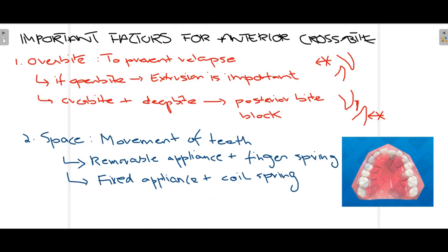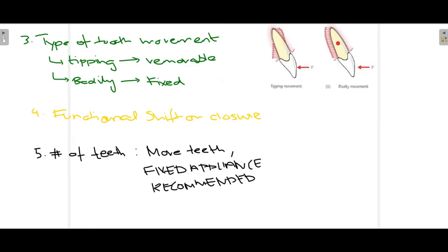The third factor is whether tipping movement or bodily movement of the teeth is required. In tipping movement, only the position of the crown changes while the root stays in place, as shown in this picture. When tipping movement is planned, we use a removable appliance.